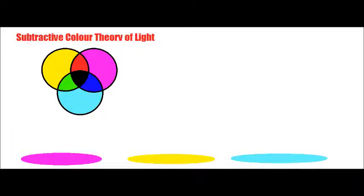You should have already watched the video of the additive color theory of light. The additive color theory of light referred to actual light and the way light, or the primary colors of light, create other different colors and how using the additive color theory of light, we're able to create white light. However, the subtractive color theory of light pretty much works almost opposite.